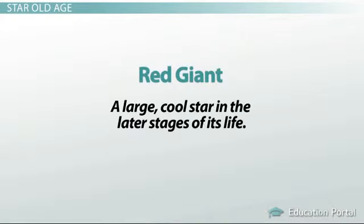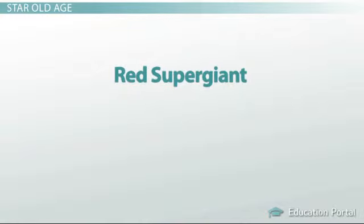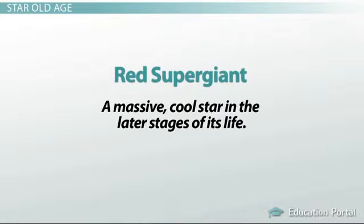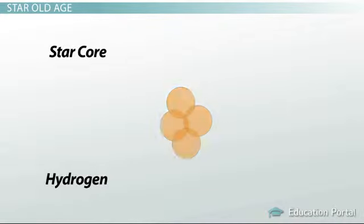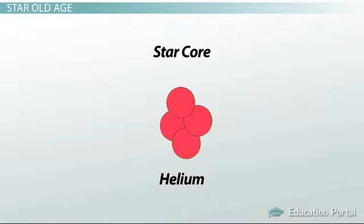A red giant is a large, cool star in the later stages of its life. A red supergiant is a massive, cool star in the later stages of its life. The giants have turned their hydrogen to helium, but now the core is dense enough that the helium is turning into carbon. This provides an additional source of energy for a while.